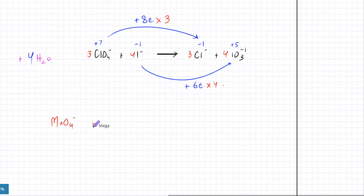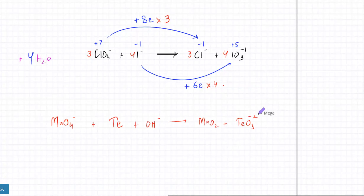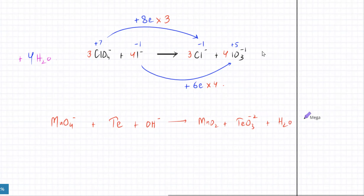We have MnO4⁻¹, Te, and OH⁻¹. The products are MnO2 plus TeO3²⁻, and there is water. Let me check if this equation is copied correctly — MnO4⁻¹, Te — that's fine. So it's this equation, and we need to balance it.